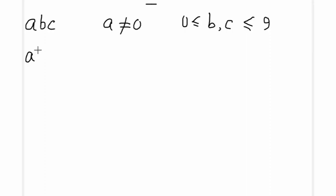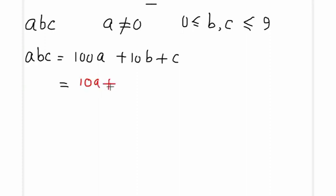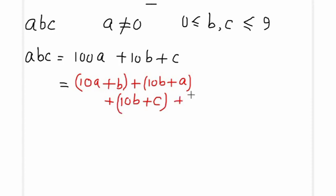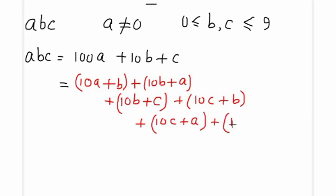As per the question, the 3-digit number ABC — which in expanded form is 100A + 10B + C — equals the sum of all possible 2-digit numbers: 10A+B, 10B+A, 10B+C, 10C+B, 10C+A, and 10A+C.